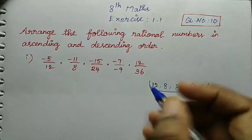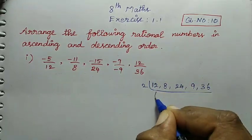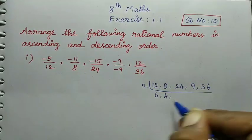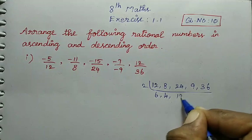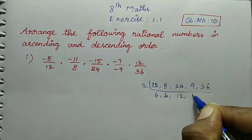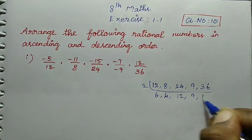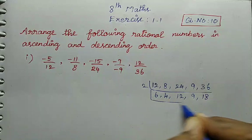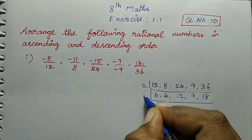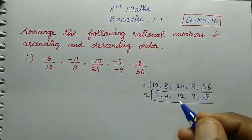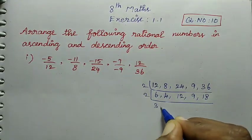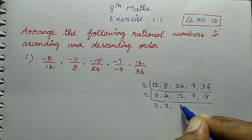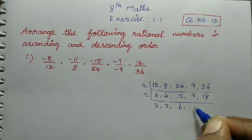So, we divide by the 2-times table. Six times, four times, twelve times, nine times, then eighteen times. Again the 2-times table: three times, two times, six times.